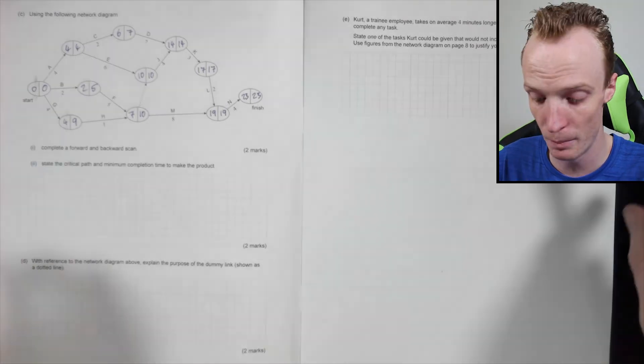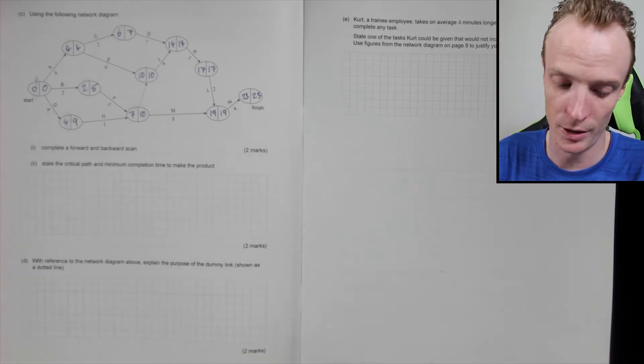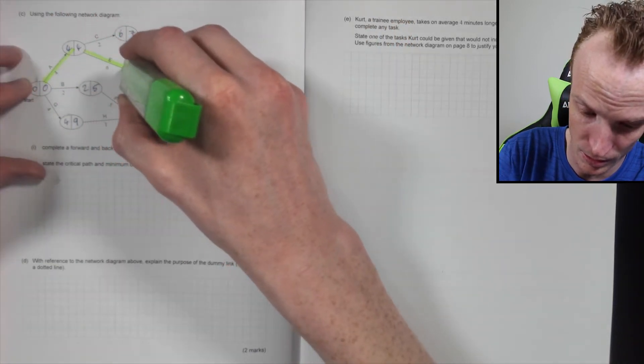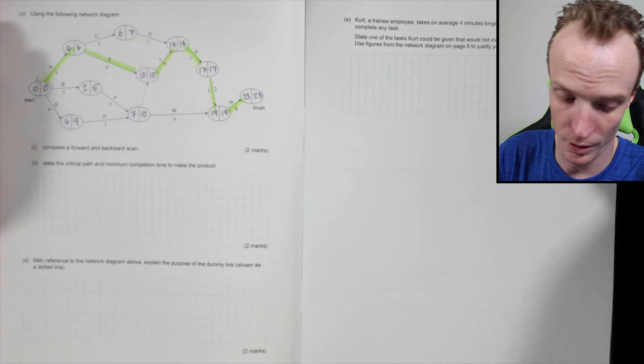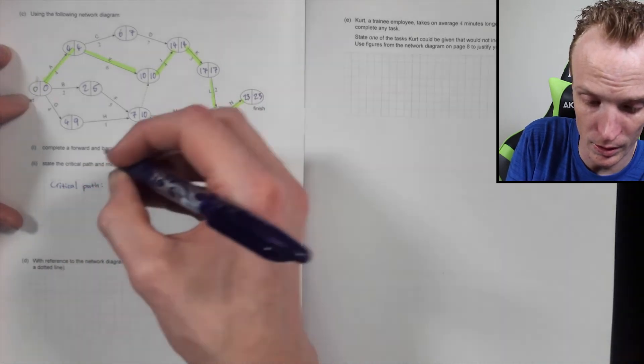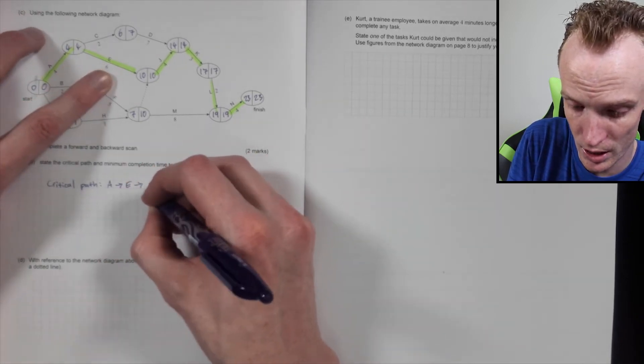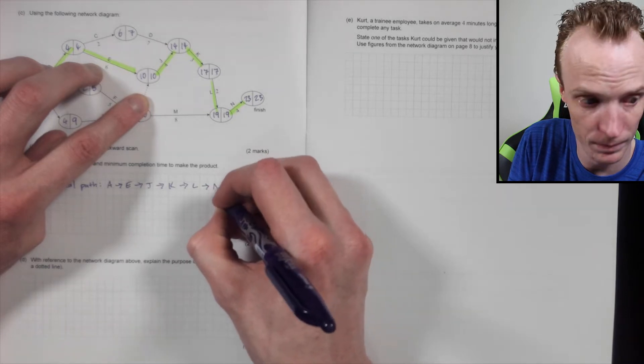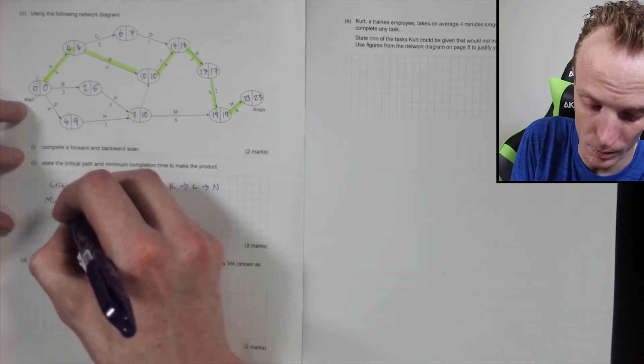Yeah, so that's the forward and backward scan. State the critical path and minimum completion time to make the product. Let's see if I've got a highlighter handy. I do. So when doing this, I like using a highlighter just to highlight the different path. So you can see here the critical path must follow there, there, there, there, there, there, and there. So the critical path is going to be task A to task E to task J to task K to task L to task N like that.